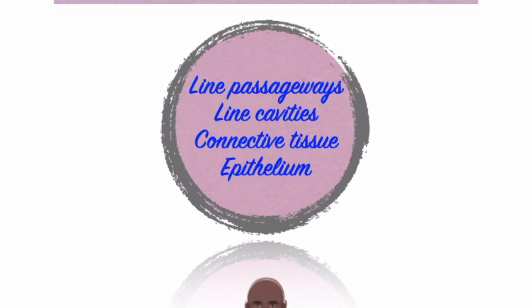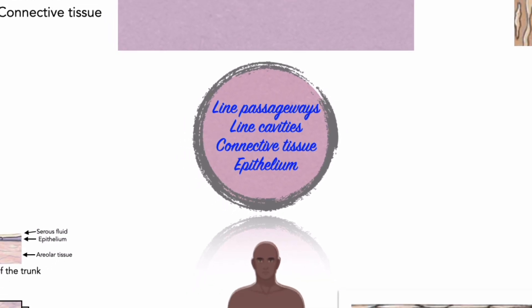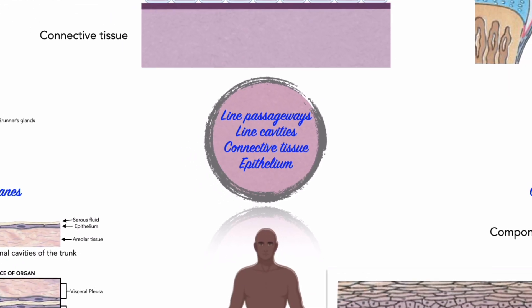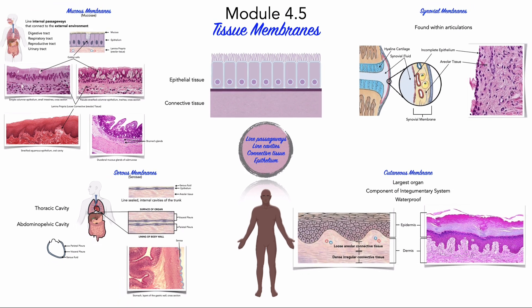In summary, tissue membranes are biological membranes that line passageways and cavities of the body. They consist of connective tissue lined with epithelial tissue. We will revisit these tissues in more detail as we learn about the body systems with which they are most closely related. Join us in our next lesson as we return to the topic of the four tissues of the human body in module 4.6, where we discuss the general characteristics of muscle tissue.